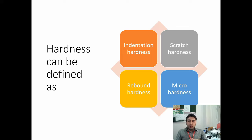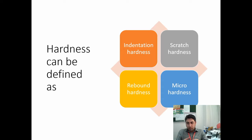Hardness can be defined in different forms: indentation hardness, if you want to make a dent in the material and find the hardness; scratch hardness, if the material is resistant to scratches; rebound hardness; or micro hardness. So it can be defined in all these four forms.